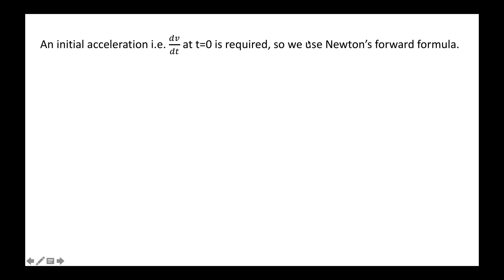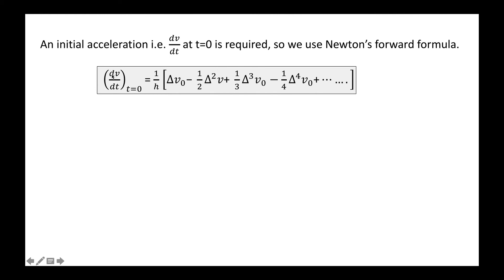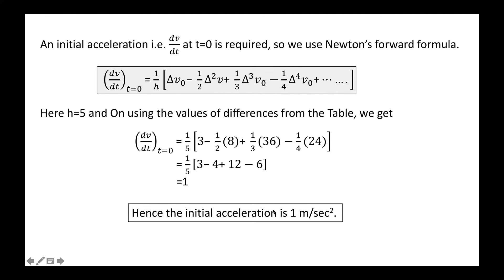We build the forward difference table with t and v as the independent and dependent variables. Δv values are computed as: 3−0=3, 14−3=11, 69−14=55, 228−69=159; then Δ²v, Δ³v, Δ⁴v follow. Since we calculate acceleration at t = 0, we use the top values. With h = 5, applying the forward difference formula: dv/dt at t = 0 = (1/5)[Δv₀ − (1/2)Δ²v₀ + (1/3)Δ³v₀ − …] = 1. Hence initial acceleration = 1 m/s².